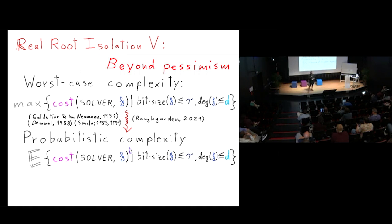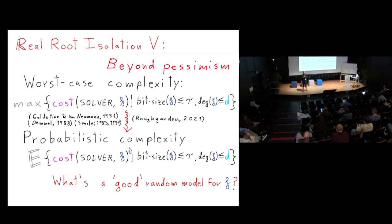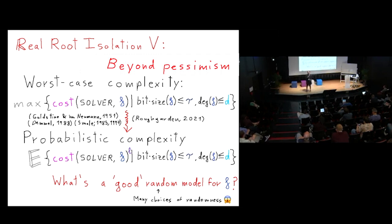The main issue with this model is: what is a good random polynomial? There are many choices for randomness, and the justification of a choice cannot simply be that the algorithm is fast for it — because in a discrete setting, you could choose one fixed polynomial with probability one, which is technically a random choice.